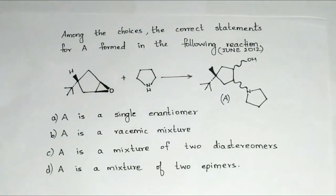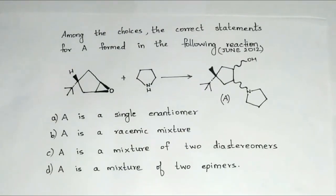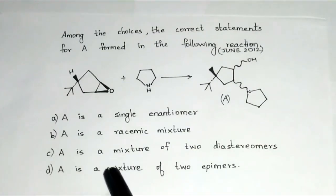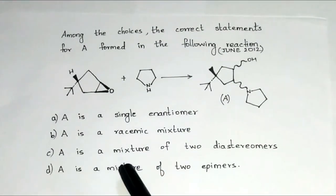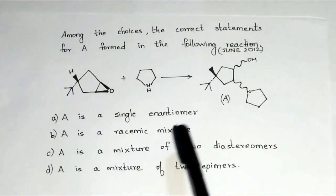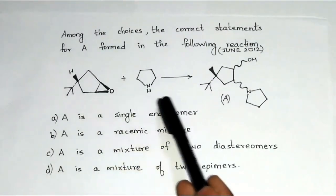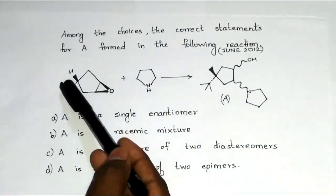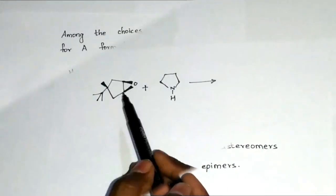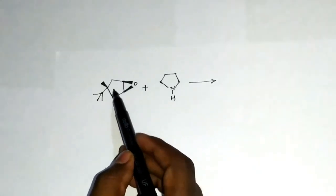Hello friends, in this video we will solve a question from CSIR net June 2012. Among the choices given here, the correct statement for A formed in the following reaction is — let us consider the reactants.